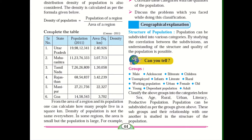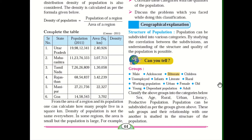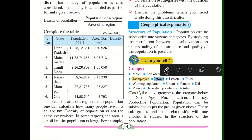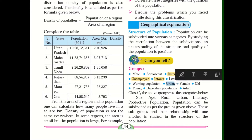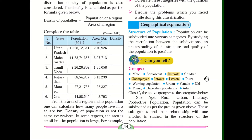Here we have groups like male, adolescent, illiterate (those not able to read or write), children, unemployed (people who are not working, jobless), infants (small children), literate (those who are educated), rural, working population, urban, female, old, and young.